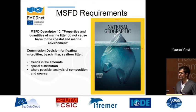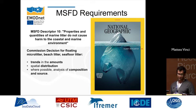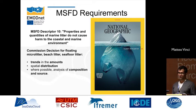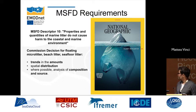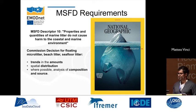Descriptor 10 deals with properties and quantities of marine litter data that do not cause harm to the coastal and marine environment. Commission decisions for floating micro litter, beach litter, and sea floor litter ask for trends in amounts, distribution, and where possible composition and source. On first view these seem like reasonable questions — they're not asking the moon — but we have to look more carefully at reality. A well-known National Geographic image highlights quite well the topic we are describing.